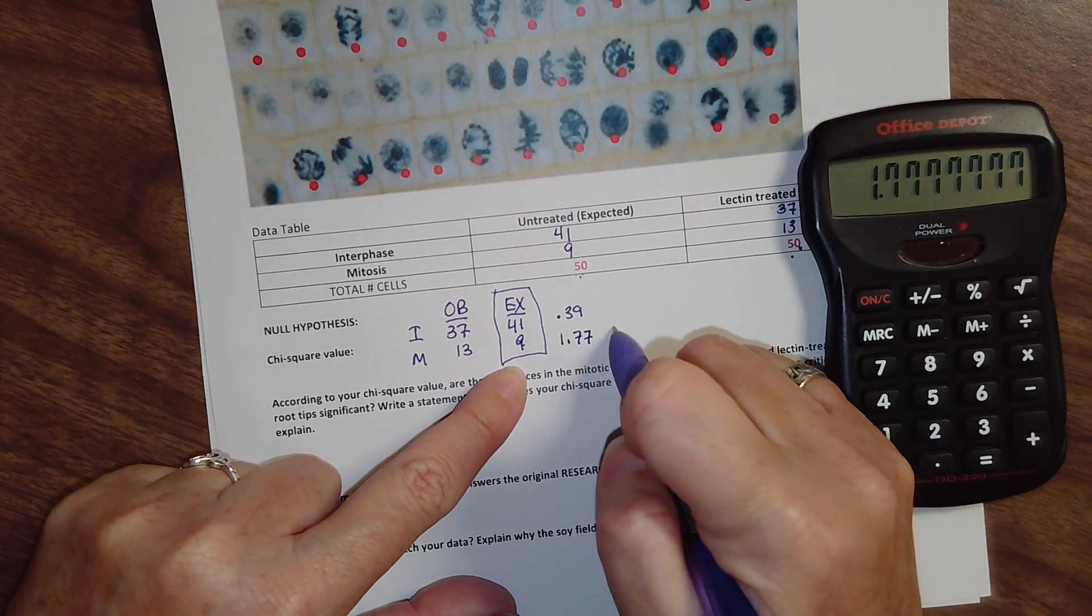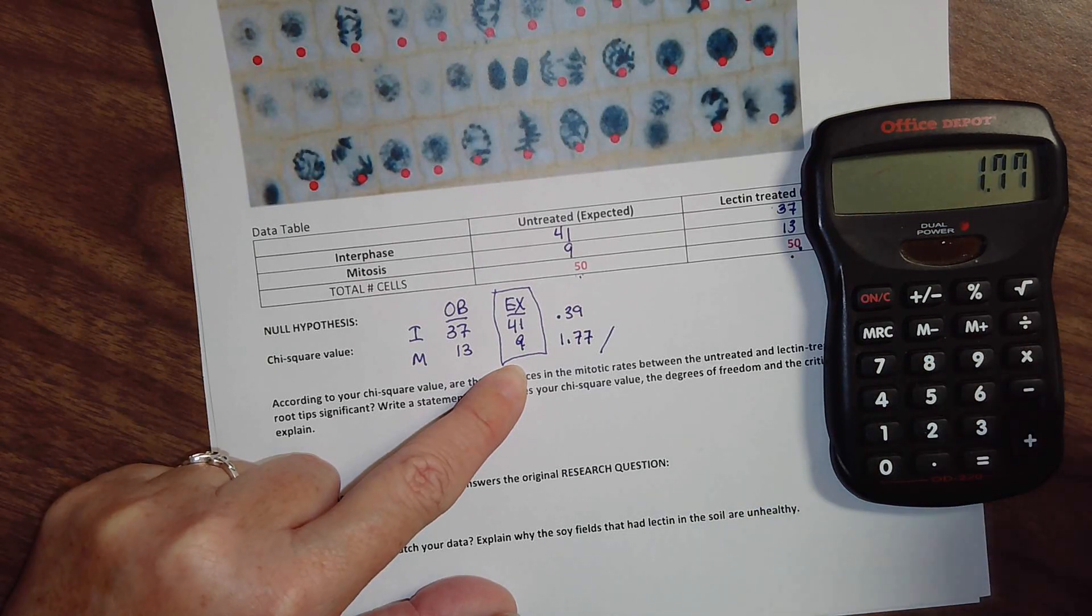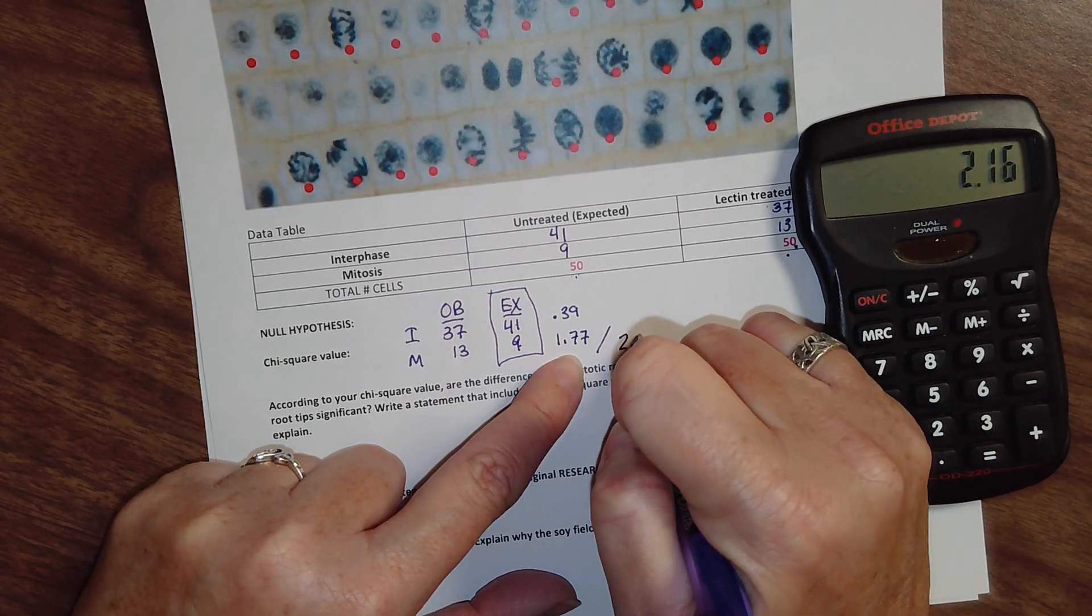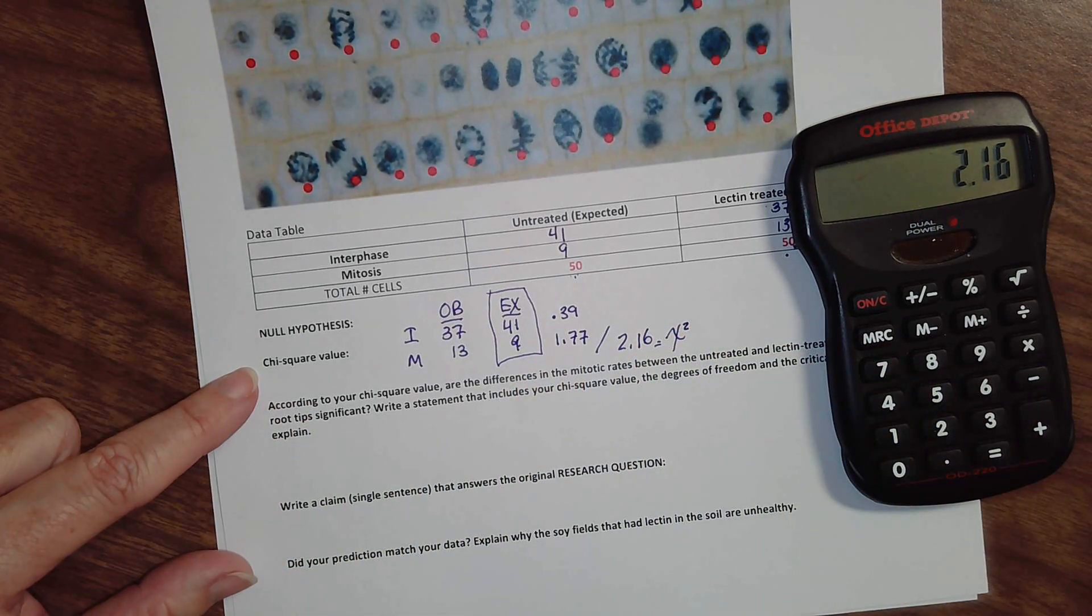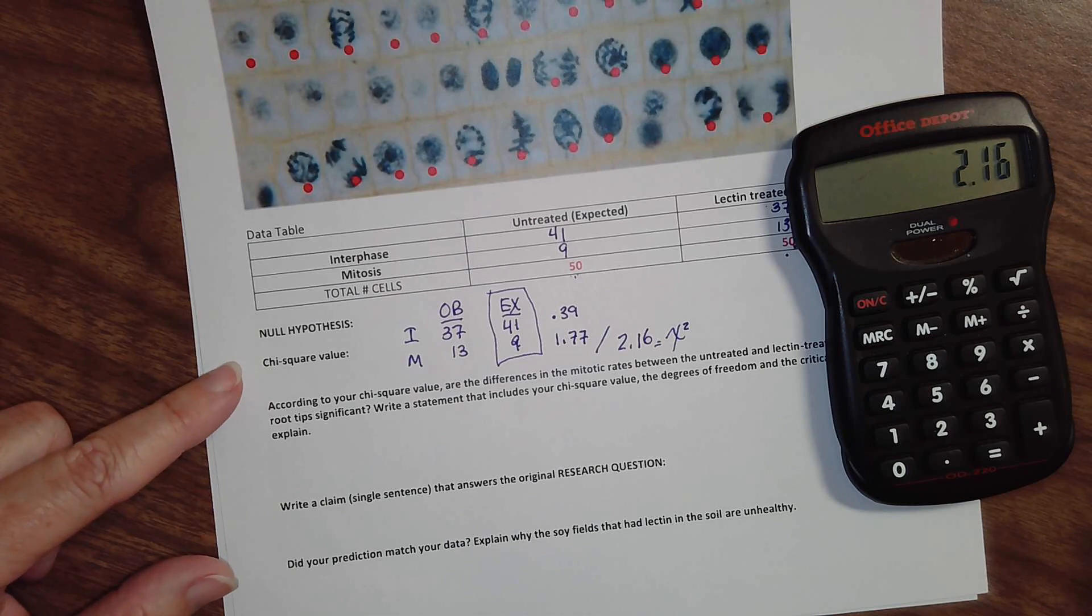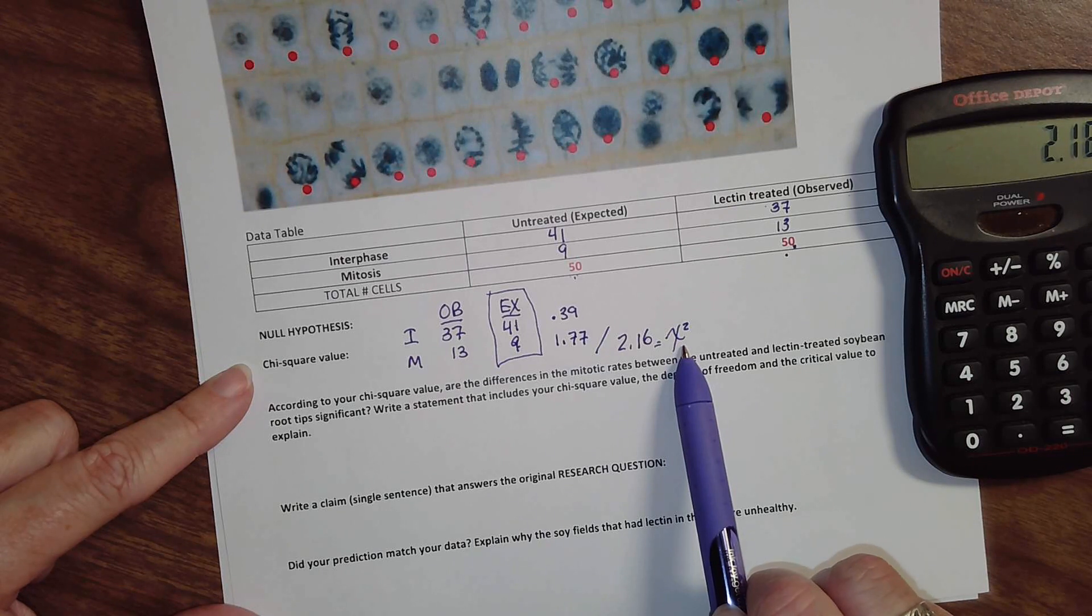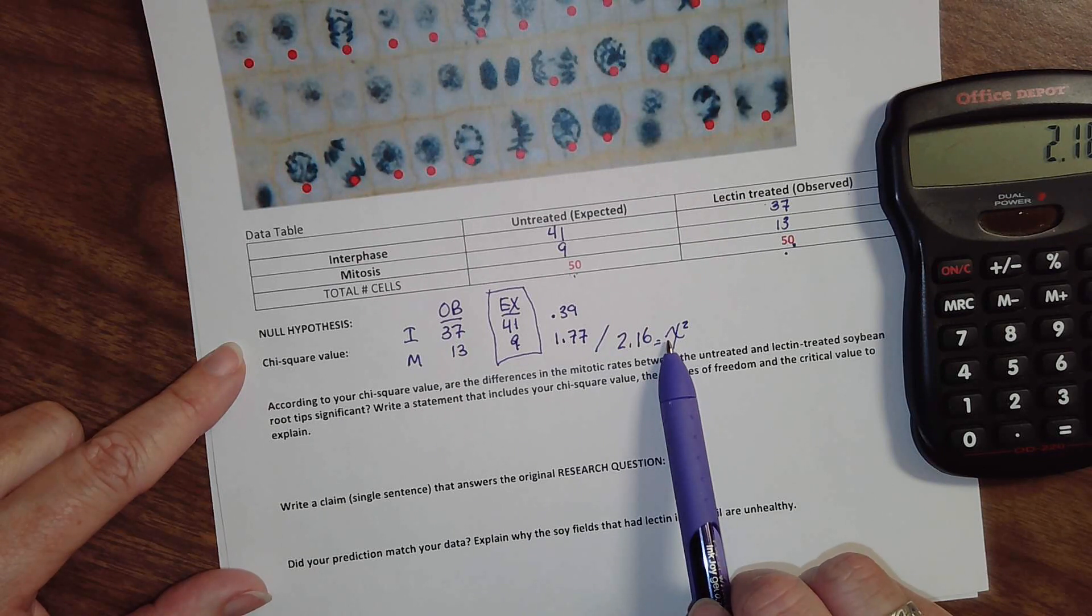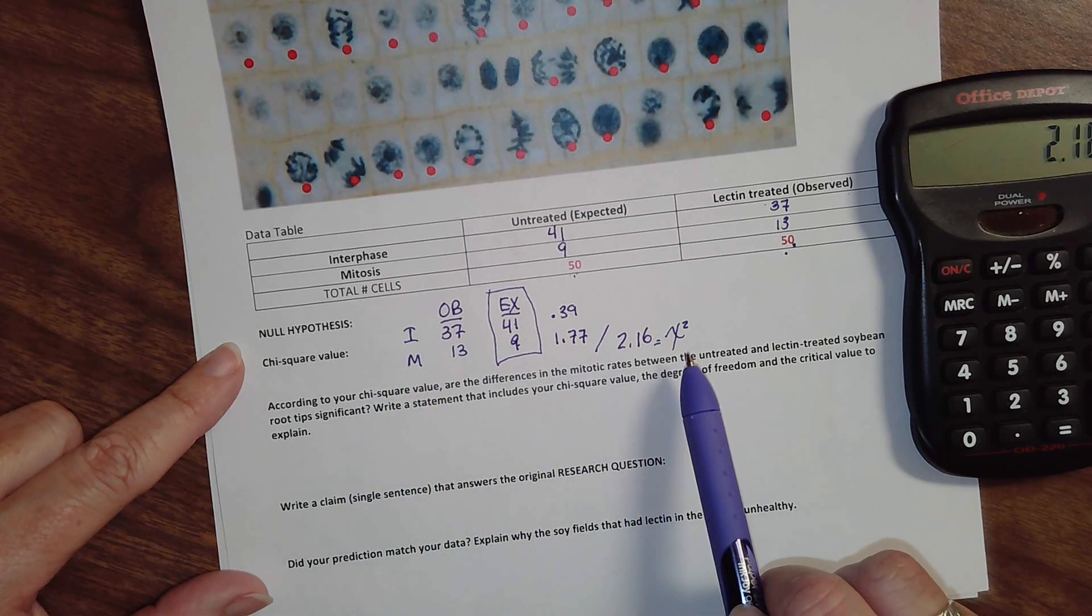When I add those two together, I get 2.16. That's my chi-square value. And then I'm going to use that critical values table to determine if the data are significantly different. So my chi-square value of 2.16 is going to be lower than the critical value. You can use your critical value table from the other day. But since there's one degree of freedom, two categories, so one degree of freedom, the critical value is going to be 3.84.